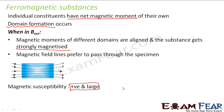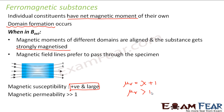In this case, permeability mu_r equals chi_m plus one. Since chi_m is now a positive and very large value, mu_r will be very much greater than one. In fact, mu divided by mu-naught is very very greater than one, or mu will be very very greater than mu-naught. These are the three classifications of materials based on their magnetic properties.